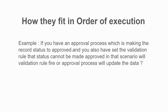For example, let's say you have an approval process that is setting the record status to 'Approved,' and you also have a validation rule that states the record cannot be approved — a contradictory situation. The validation rule says you cannot change it to 'Approved,' but the approval process will go and update it. What will happen? Will the validation rule fire? The answer is: most probably the approval process will update the data, because the validation rule fires first and will miss the approval process, so the record will get updated.